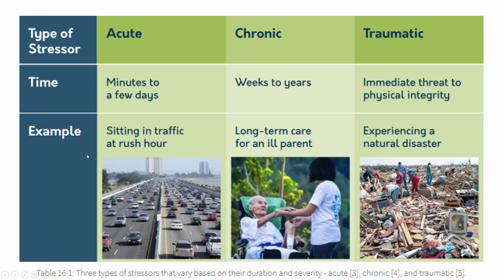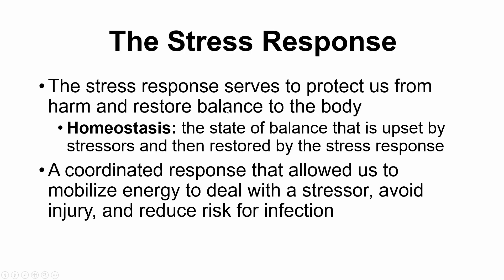Looking at examples: an acute stressor would be sitting in rush-hour traffic for a couple of hours — not too intensive and not too long. A chronic stressor would be the long-term care of an ill parent, something that persists for years. A traumatic stressor involves that immediate threat to physical integrity, such as experiencing a natural disaster or being the victim of a crime. Those are our stressors and types of stressors.